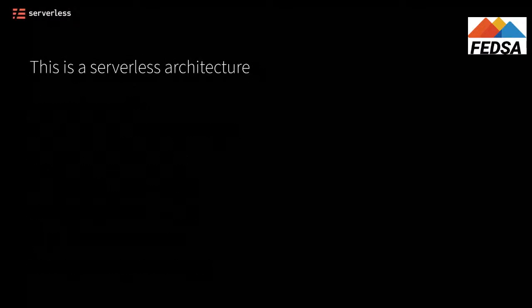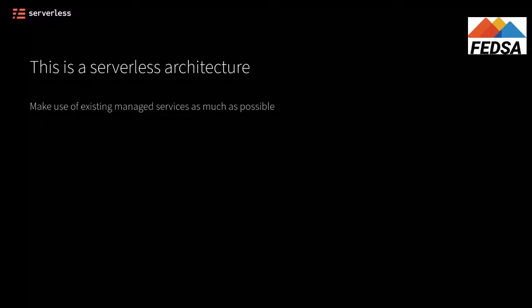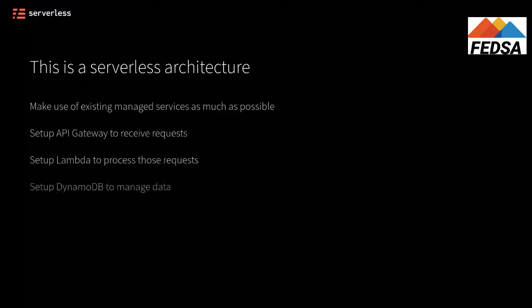This is what a serverless architecture is kind of made up of — you make use of existing managed services as much as possible. Instead of relying on big machines sitting there all the time, you try to use managed services to alleviate any hassle and worry. You set up API Gateway to receive incoming HTTP requests, use Lambda to process those requests, use DynamoDB to manage the data, and API Gateway handles the responses as well. So that three-tiered request, process, store — it's all managed with these AWS services for you.